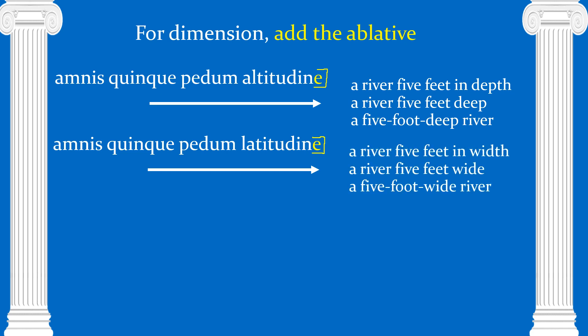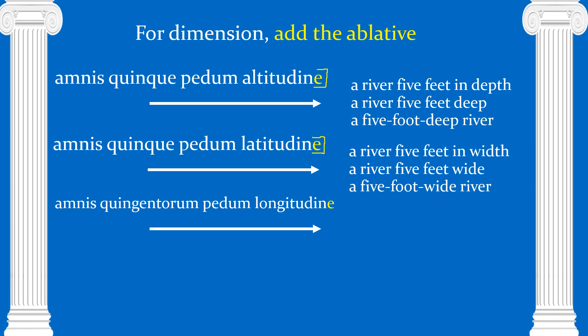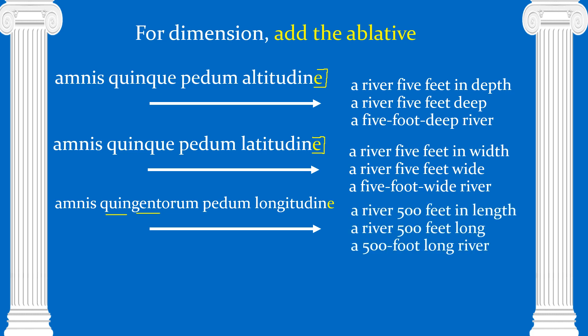Latitudo is connected to things that go sideways, so we're thinking of width or breadth: 'a river five feet in width' or 'a five-foot-wide river.' Our third dimension comes from longitudo, which means long: amnis quingentorum pedum longitudine — 'a river 500 feet in length' or 'a river 500 feet long.' So take careful note: altitudine, latitudine, longitudine — those are all ablative, giving us dimension. Our unit of measurement and the number, if possible, are in the genitive. Genitive in orange, ablative in yellow, and we'll normally see things in this order.